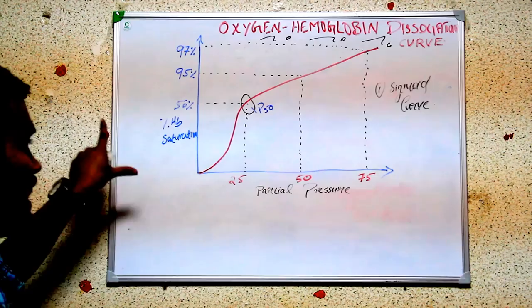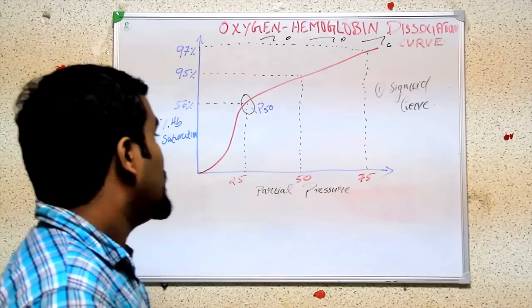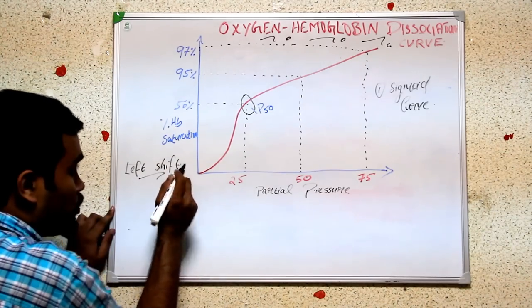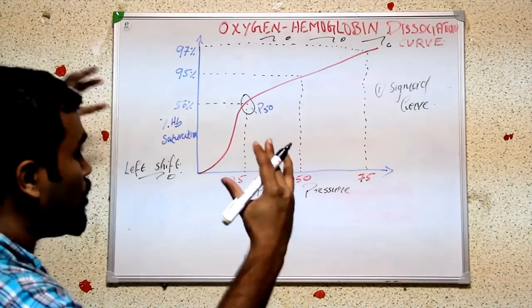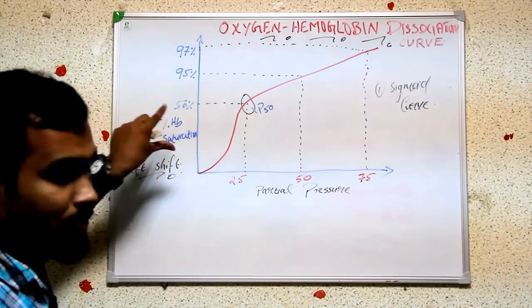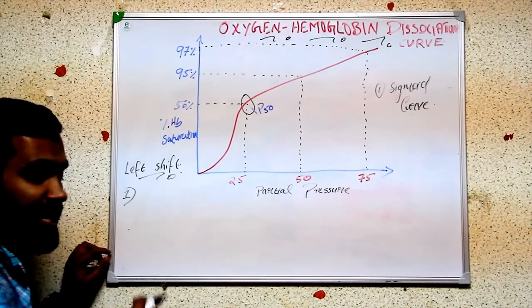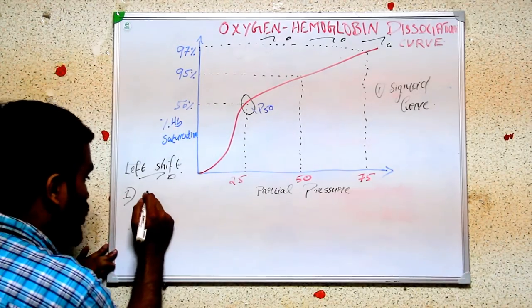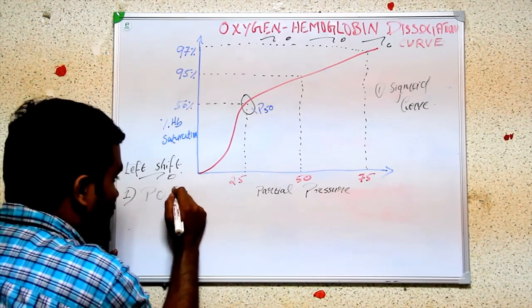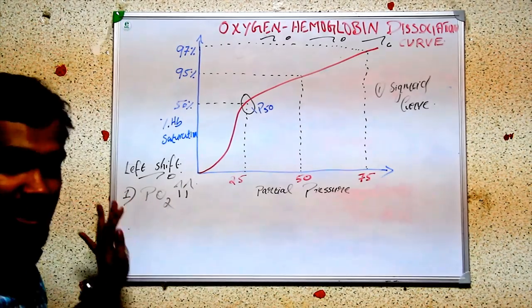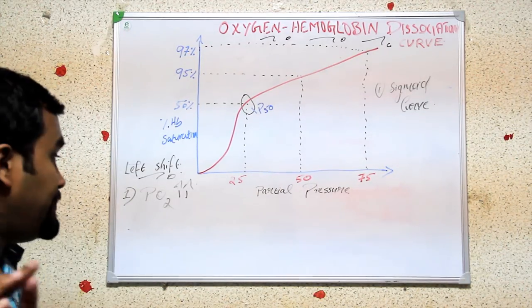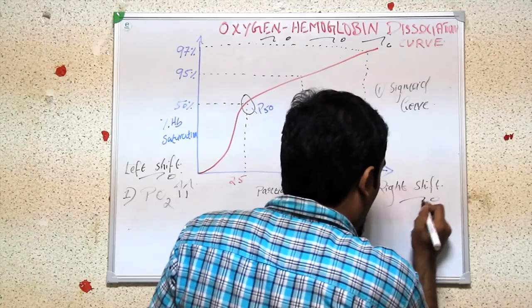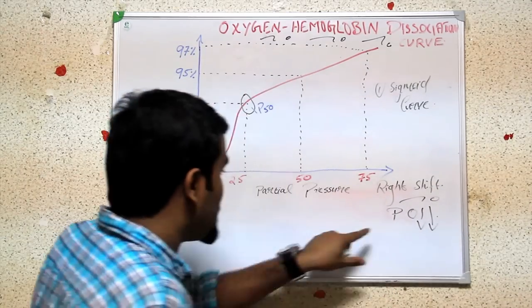No need to memorize — let's study the factors logically. In left shift, there is more binding of oxygen with hemoglobin, so there will be more hemoglobin saturation. If there is more oxygen, it means the partial pressure of oxygen (PO2) is increased — that gives a left shift. For right shift, just take the opposite: if partial pressure of oxygen is decreased, the sigmoid curve will shift to the right.